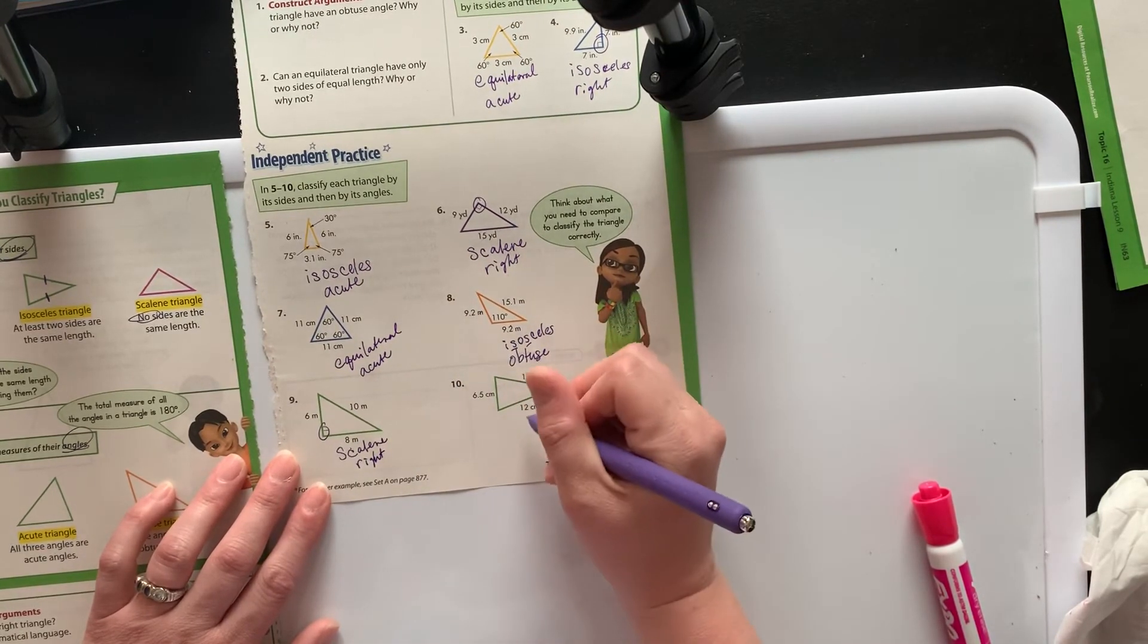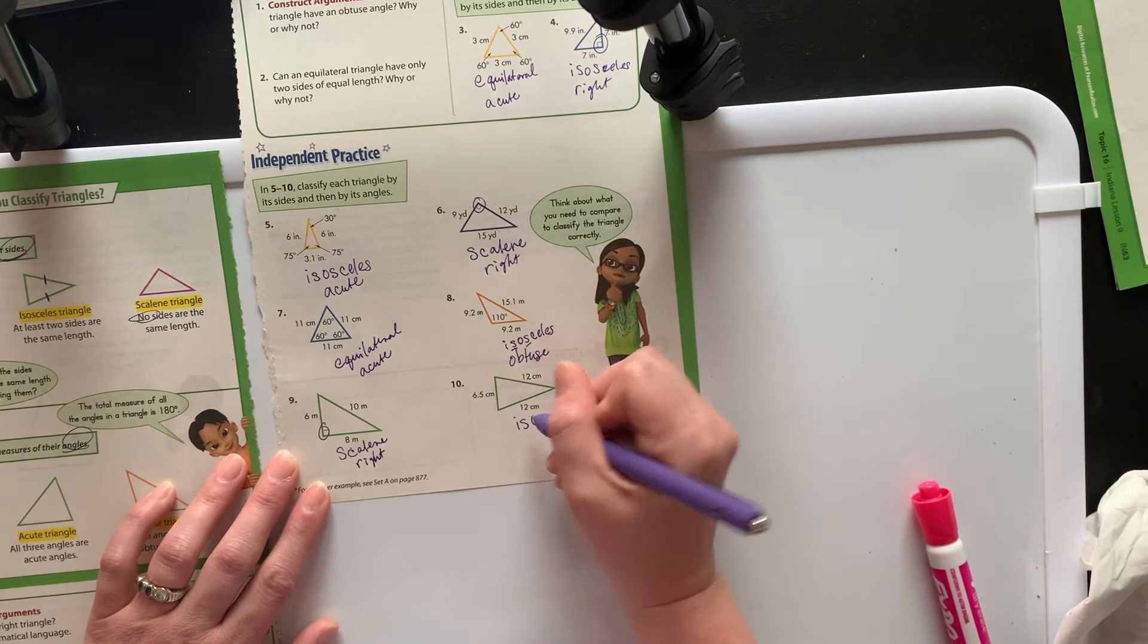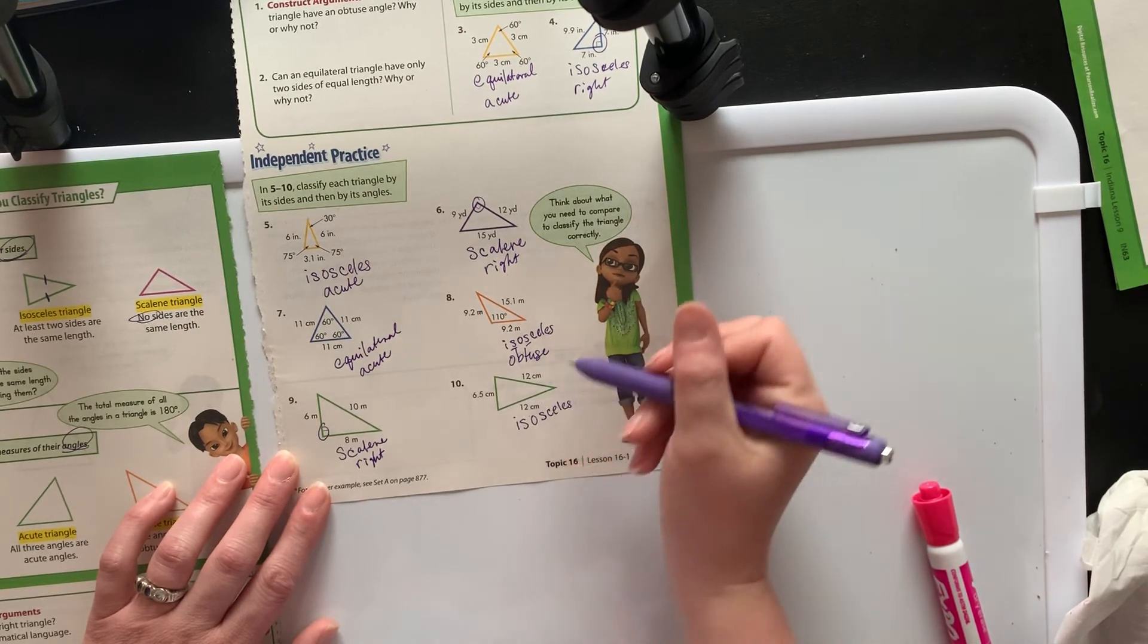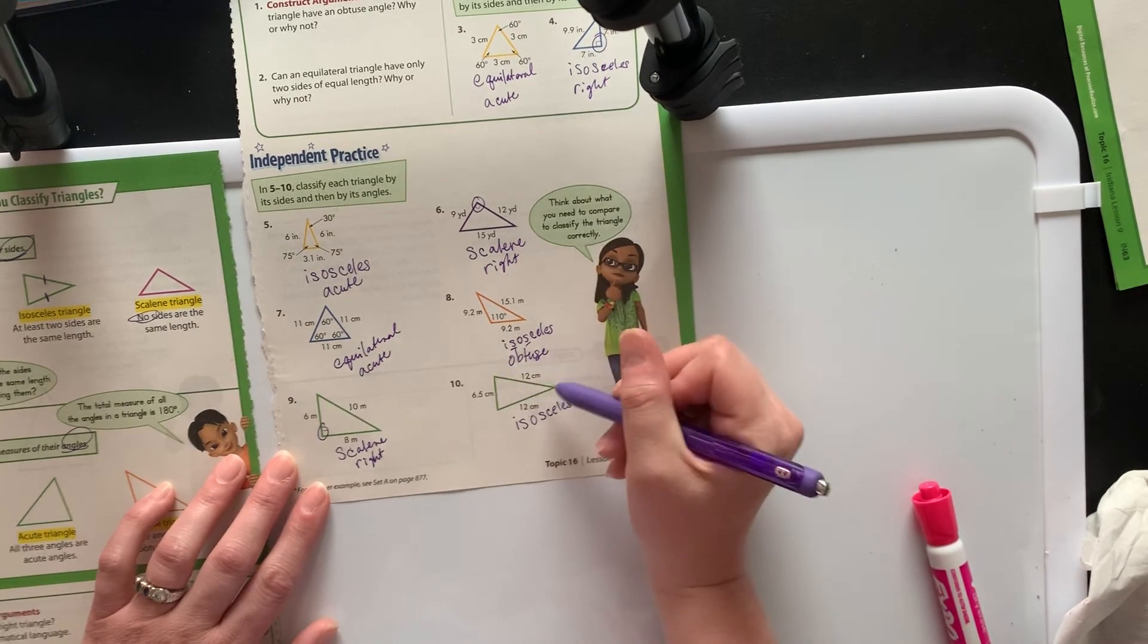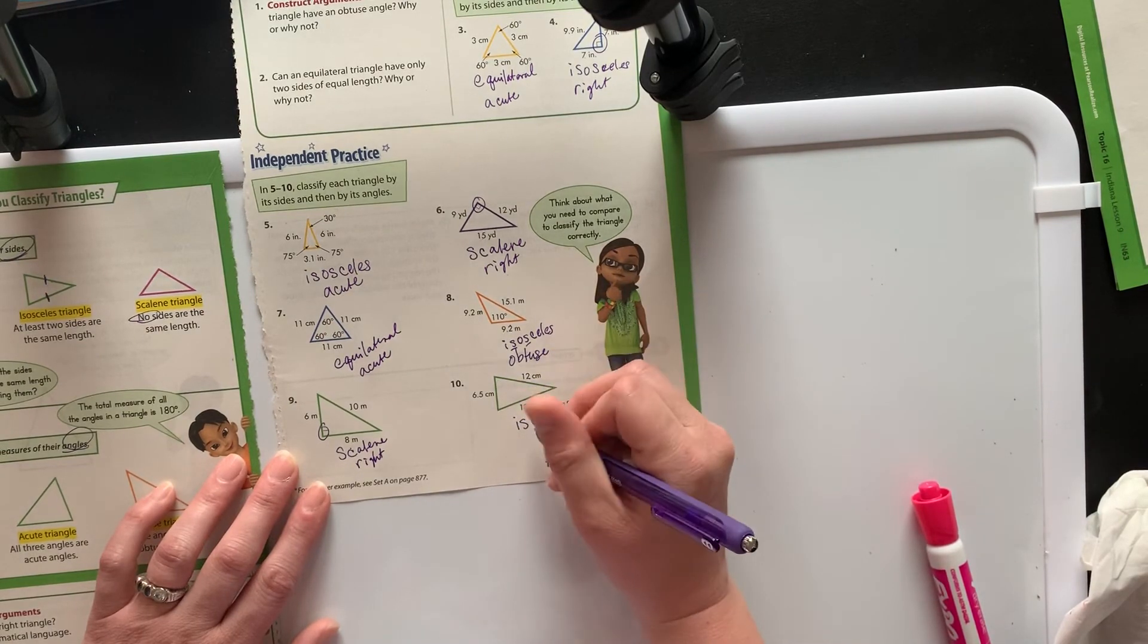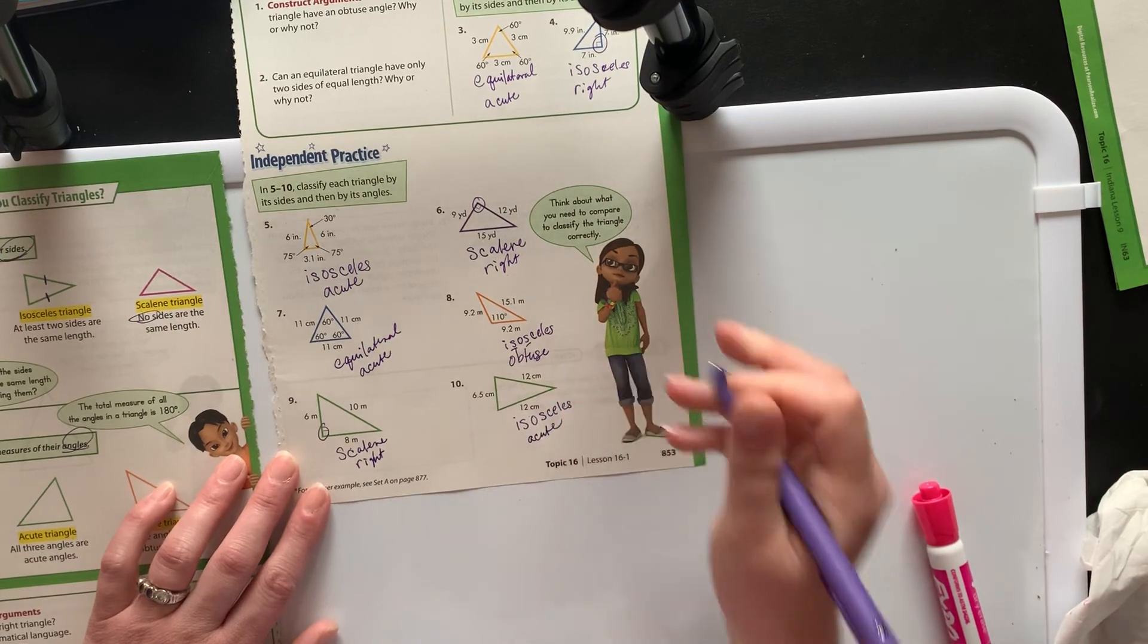Two sides the same length, that is going to be isosceles. Boy, they really like isosceles on here. And then when I'm looking at my angles, I can tell this is an acute angle, this is an acute angle, and this is an acute angle. So that is going to be an acute triangle.